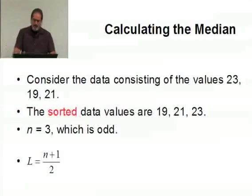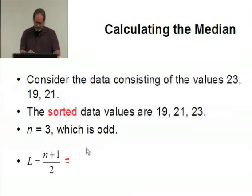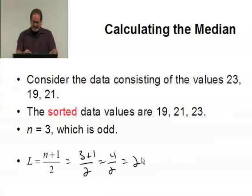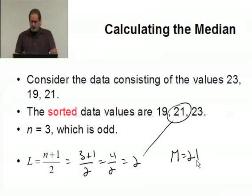Let's take a look at another example. Suppose we have the values 23, 19, and 21. First thing I want to do is sort them. Now it's sorted, smallest to largest: 19, 21, 23. N equals 3, which is odd. The location is going to be 3 plus 1 divided by 2, which is 4 divided by 2, which is 2. The second value is 21, so the median here would be 21.